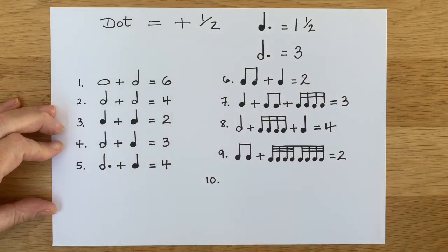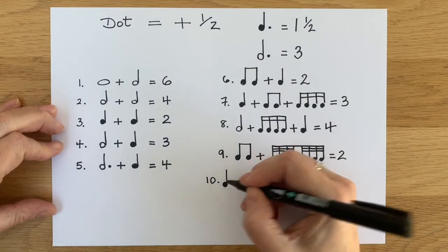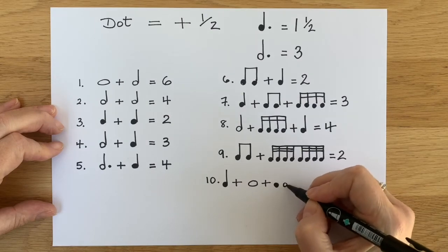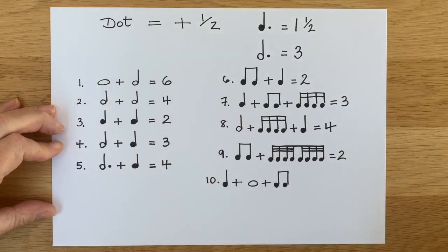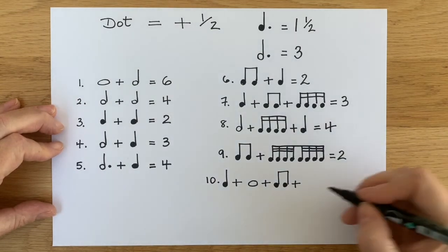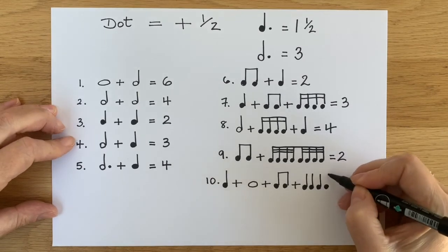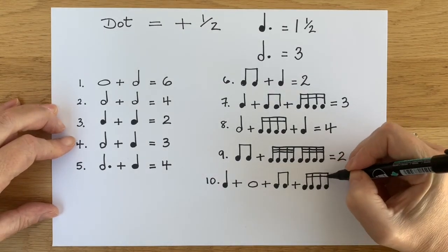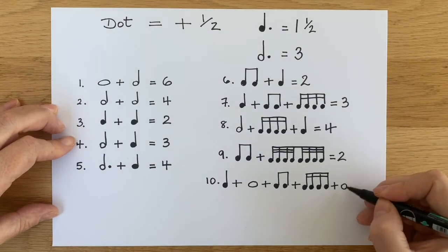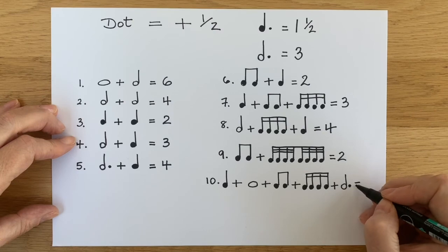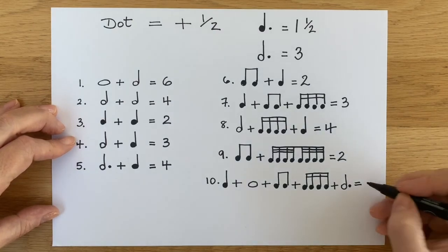Here's number ten, the last one. We're going to start with a crotchet. Then we're going to add a semi-breve. Then two quavers. This is going to be a fairly long sum. We're going to add next some semi-quavers. And there's four semi-quavers in one beat, remember. And semi-quavers have two lines on the top. And then after the semi-quavers, we're going to add a dotted minim. So if you need to pause to have a think about this sum, you can pause the video. Have you got the total? It's ten.